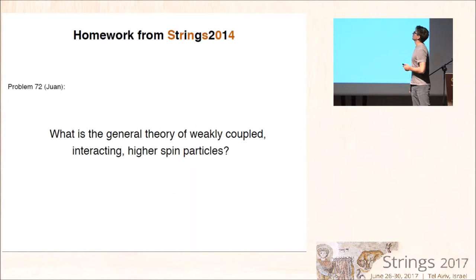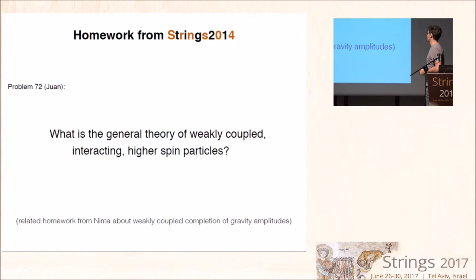To motivate the problem, let me start and recall that at Strings 2014, Andy Strominger gathered a list of questions or homework problems from the speakers, and there was a homework problem from Juan, which went like this. What is the general theory of weakly coupled interacting high-spin particles? It was a question, and there was a related question also by Nima, how do you weakly couple complete gravitational amplitudes? Let me explain first what this question means, why is it interesting, and where we stand.